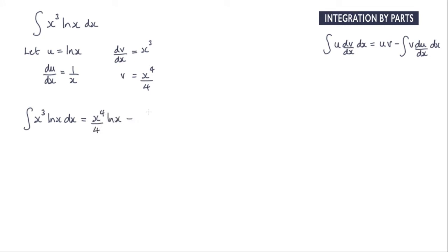Minus the integral of v du dx. So v du dx is here. We've got x to the power of 4 over 4 multiplied by 1 over x with respect to x.